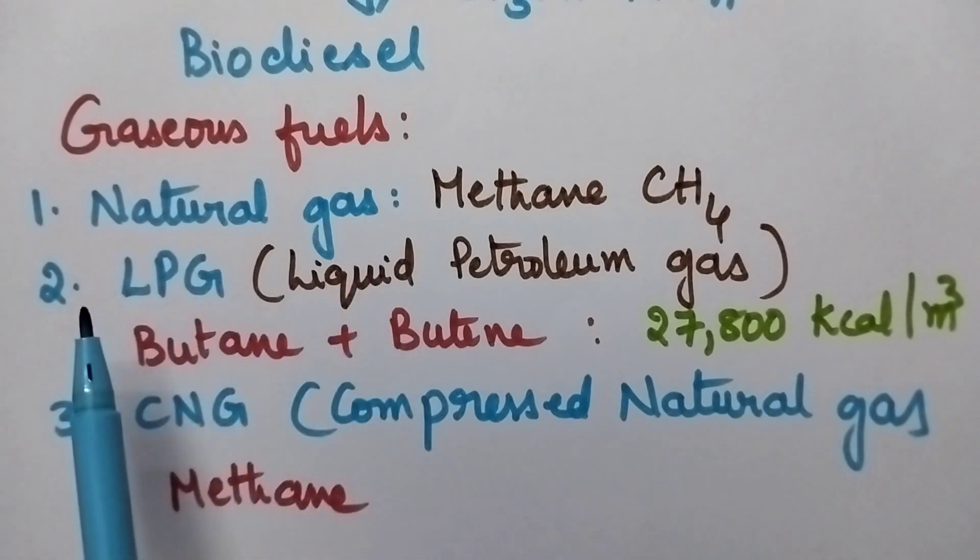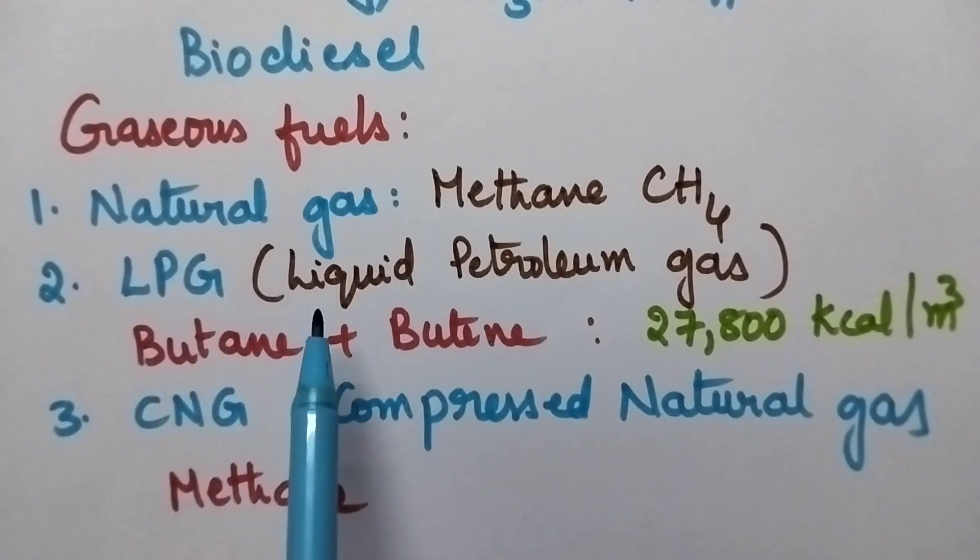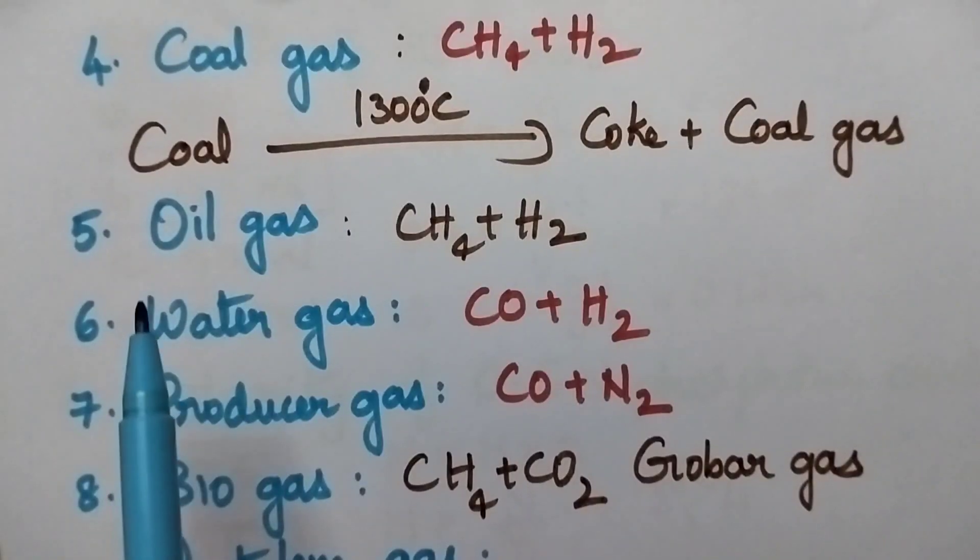Moving to the gaseous fuels. First one is natural gas. Its composition is methane. LPG means liquid petroleum gas. Its composition is butane plus butane. And it is having the highest calorific value, 27,800 kcal per m3. It is the domestic fuel, so it is used as domestic fuel. CNG means compressed natural gas. Its composition is methane, that is CH4.